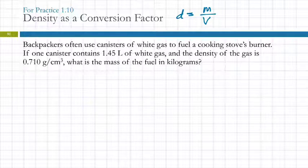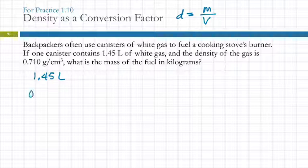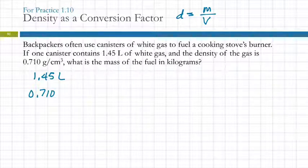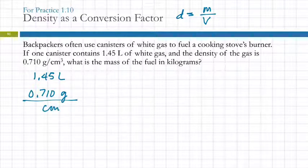Backpackers often use canisters of white gas to fuel a cooking stove's burner. If one canister contains 1.45 liters of white gas and the density of the gas is 0.710 grams per cubic centimeter, what is the mass of the fuel in kilograms? This grams per cubic centimeter is written horizontally with a slash — don't write it that way when you write it out by hand. It's done that way because it's easier to type into the computer. When you're writing by hand, write grams over cubic centimeters as a vertical fraction, so it's obvious to your brain that it is a fraction.